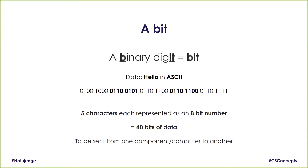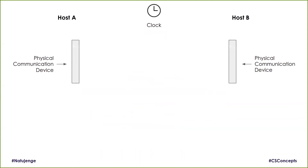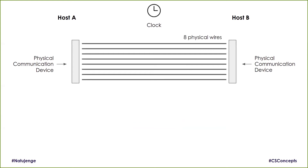This data is what we send over the network or from one component to another. Now that you know what a bit is, let's move on to the bus. In the previous episode, we also looked at how two devices can communicate, and we looked at eight physical wires used to connect two devices.